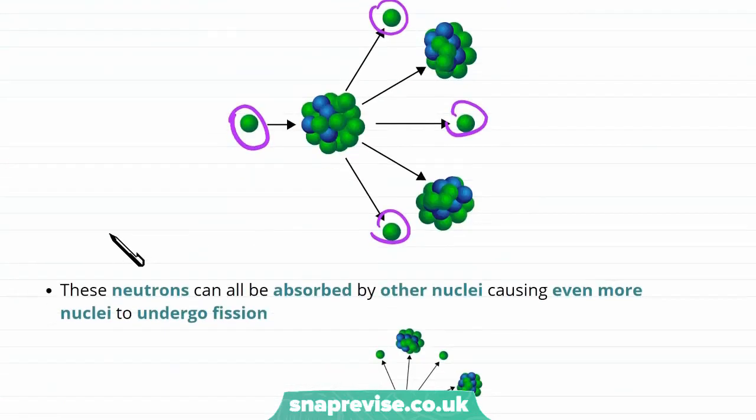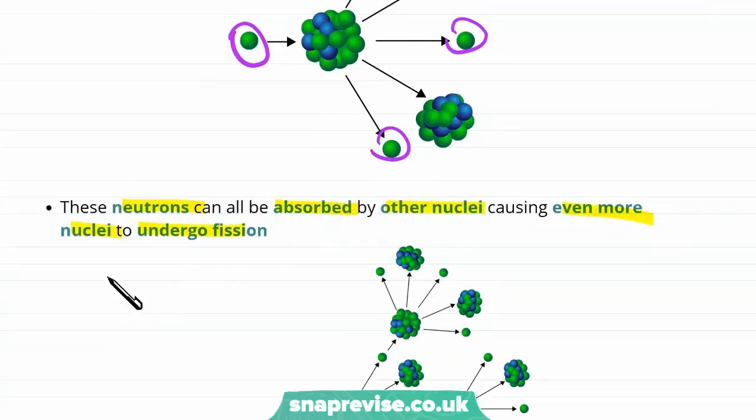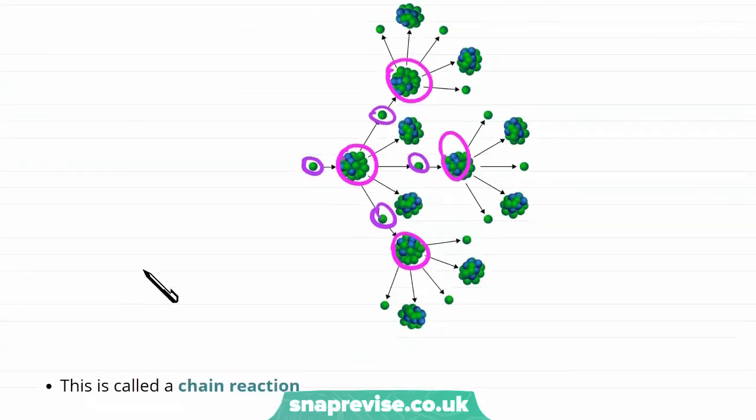Now the good thing about this is that these neutrons can then all be absorbed by other nuclei, causing even more nuclei to undergo fission. So this neutron here goes into this nucleus. This nucleus then splits up as a result and it emits three new neutrons. Each of those neutrons can be absorbed by another nucleus, and the process goes on with more and more nuclei undergoing fission.